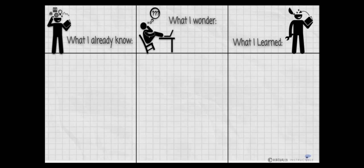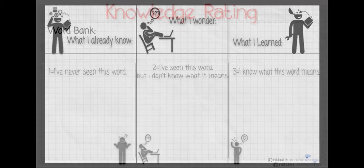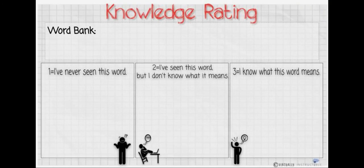For prior knowledge check-ins, one option is your basic KWL — what do I know, what questions do I have, what did I learn. Everybody knows this one; it's been around forever because it's good. Another one I do is a knowledge rating, which I think is also pretty common. I put vocabulary terms from the chapter we're about to read into a word bank — I use this more in history — and students interact with the terms in different ways, including in Jamboard and Nearpod.